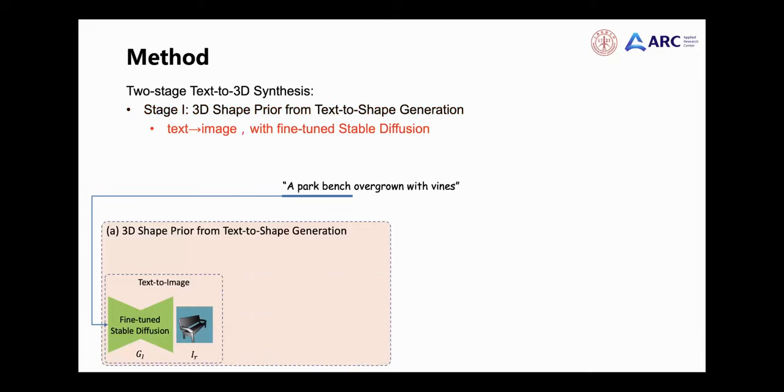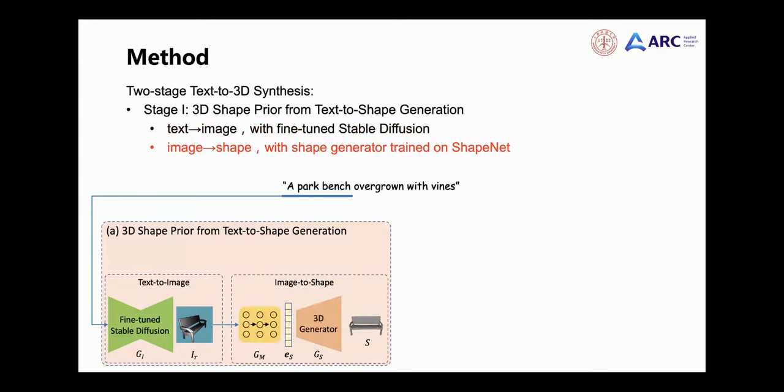Therefore, we divide this stage into two steps and use 2D images to connect the text and 3D modalities. We first use the text-to-image model to generate rendered images of the shape, and then use the shape generator to generate 3D shapes from the images, thus solving the problem of text-to-shape generation in a simple and effective way.